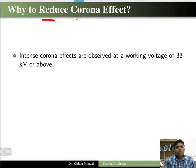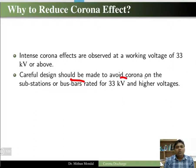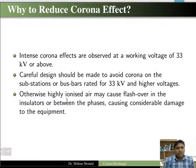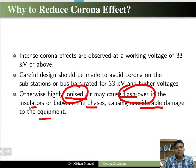We need to reduce corona because intense corona effects are observed at working voltages of 33 kV and above. Careful design should be made to avoid corona on substations or bus bars rated for 33 kV and higher. Otherwise, highly ionized air may cause flashover in insulators or between phases, causing considerable damage to equipment.